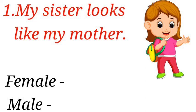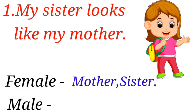My sister looks like my mother. In this sentence, sister looks like mother. Mother and sister are the females. There is no male in this sentence. So in this sentence, the females are sister and mother. Did you understand?